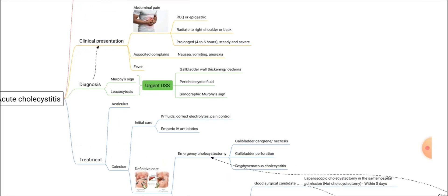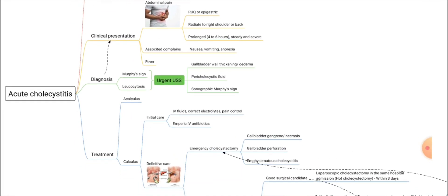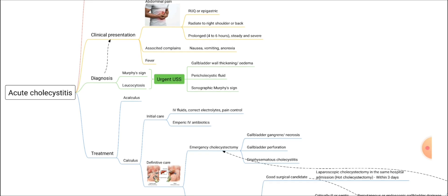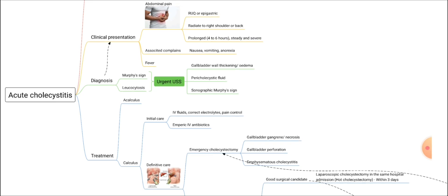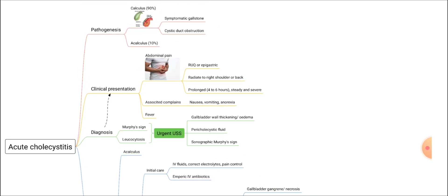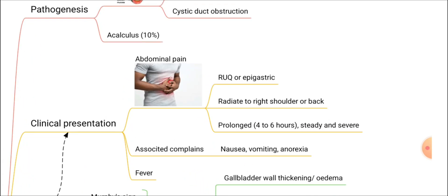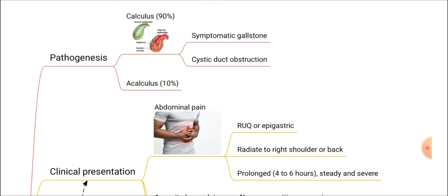What is acute cholecystitis? Acute cholecystitis is inflammation of the gallbladder. Your gallbladder is located in your right hypochondria and it gets inflamed in a short period, so it is acute — we call it acute cholecystitis.